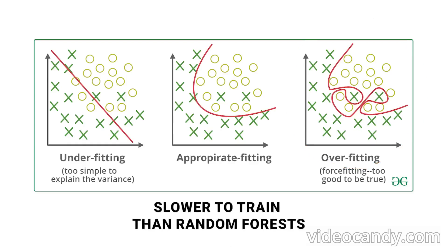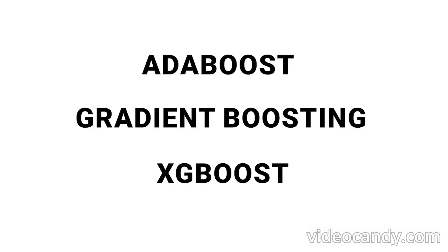Famous examples of boosted trees are AdaBoost, gradient boosting, and XGBoost, the details of which are beyond the scope of this video. Now let's get to the reigning king of AI, neural networks.